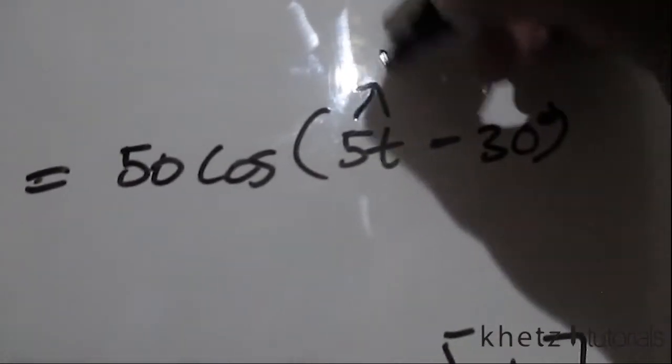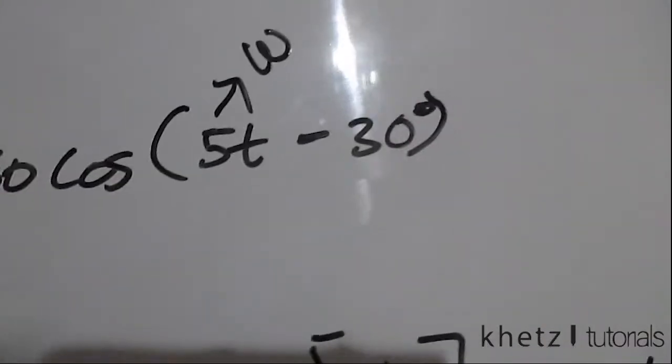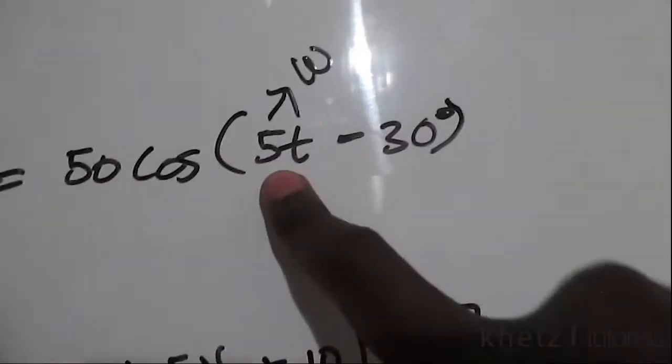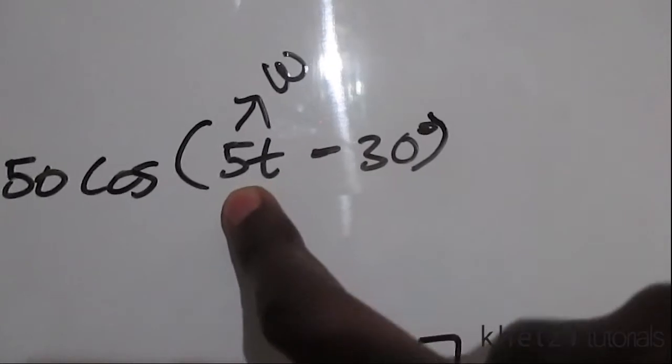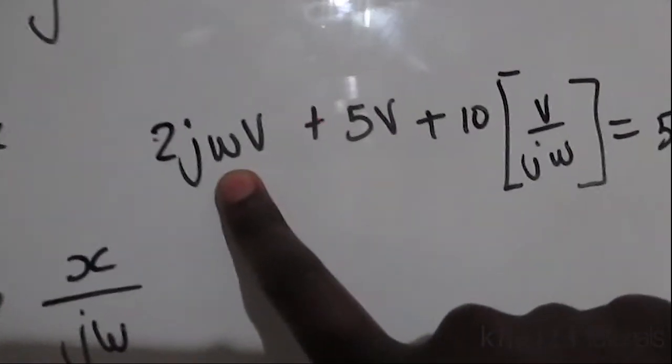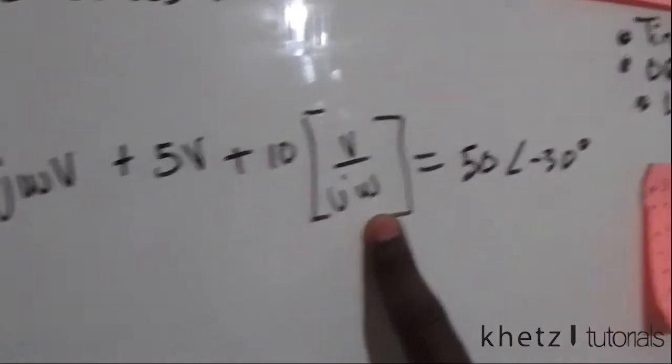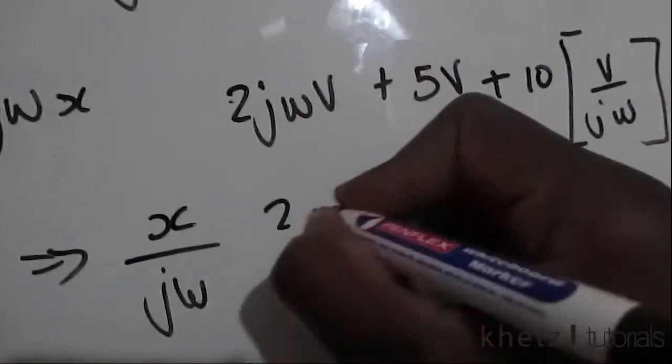So this will be substituted everywhere where we see omega. So let's substitute. We're going to have 2j5v plus 5v plus 10v divided by j5.